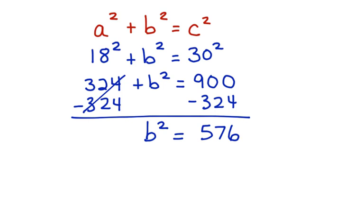Now, we want to clear this square, and the way to do that, so B can really be by itself, is to take the square root of both sides. Squaring and square roots are inverses of each other, so they cancel, leaving B alone. The square root of 576 is 24.